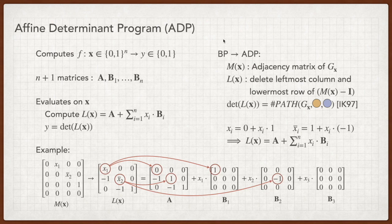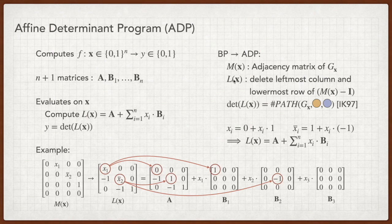There's a transformation from BPs to ADPs. Let M of x denote adjacency matrix of a DAG. We can obtain L of x by deleting the first column and the last row of M of x minus identity matrix. Correctness is from IK97, which says that the determinant of L of x equals the number of paths from the first node to the last node.